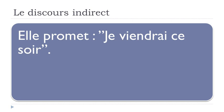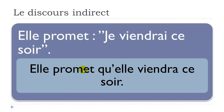A third example: elle promet, je viendrai ce soir. Promettre is 'to promise', je viendrai means 'I will come', ce soir means 'this evening'. In the indirect form, elle promet que — the subject je becomes elle (feminine), and viendrai at the future becomes viendra for elle. Ce soir doesn't change. So: elle promet qu'elle viendra ce soir.